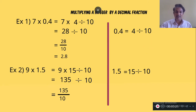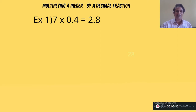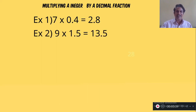So 135 divided by 10 means 13.5. Now observe these two examples again: 7 into 0.4 equals 2.8, and 9 into 1.5 equals 13.5. Is there another method for multiplying an integer by a decimal fraction? Is there an easier method?